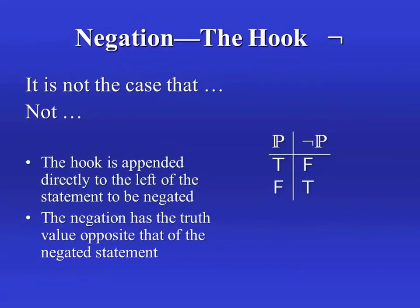The simplest truth-functional connective is negation, which we represent with a hook. In order to negate a statement, say p, we just attach a hook onto the left-hand side of the p. This little table on the right is called the characteristic truth table for negation, and what it shows us is the value of the compound based on the value of the component. This p with the extra stripe is what we call a meta-variable, used to represent any statement, whether simple or complex. Whatever statement p is, it's either going to be true or false. When p is true, hook-p is false, and when p itself is false, hook-p will be true. The negation of a statement has the truth value opposite the original statement, just as you would expect.